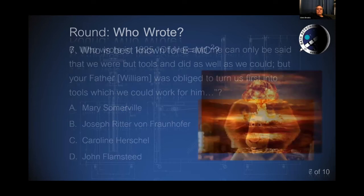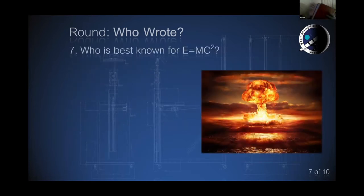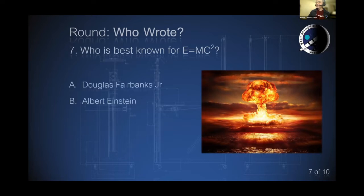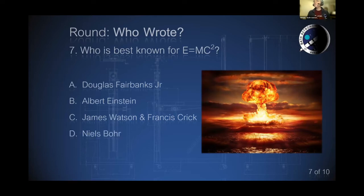Question seven: who is best known for E equals mc squared? Douglas Fairbanks Jr., Albert Einstein, James Watson, Francis Crick, or Niels Bohr? Who is best known for E equals mc squared?